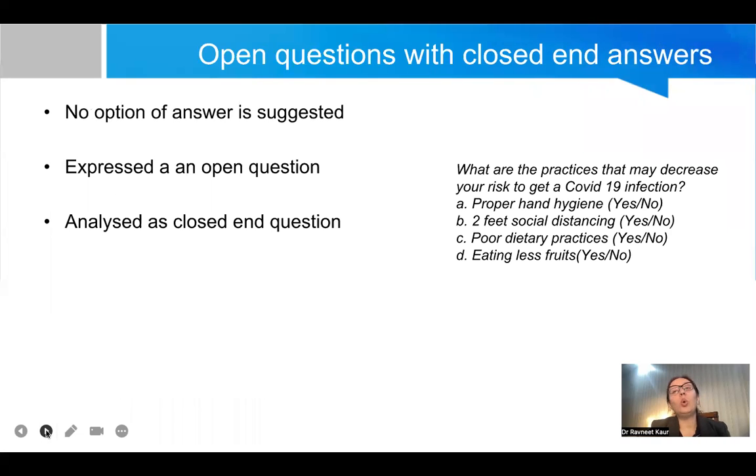Then comes the open questions with closed ended answers. The questions are open which may have a variety of answers but you give them options with closed end answers. Like what are the practices that may decrease your risk to get a COVID-19 infection? The respondent may know all the answers or two to three of them if you kept it an open question, but when you give them options and have yes or no as their closed end answers, the respondent will answer between yes or no only. So it is analyzed as a closed end question.